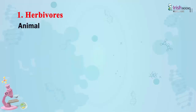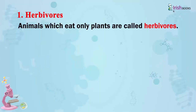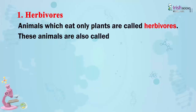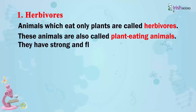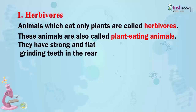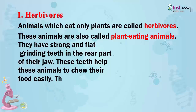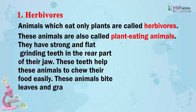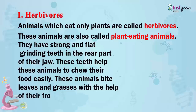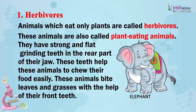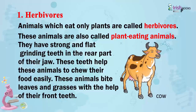Herbivores. Animals which eat only plants are called herbivores. These animals are also called plant-eating animals. They have strong and flat grinding teeth in the rear part of the jaw. These teeth help them to chew their food easily. These animals bite leaves and grasses with the help of their front teeth.